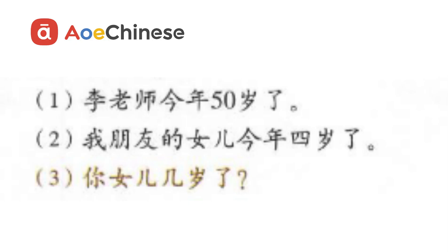For example: 李老师今年五十岁了。 Professor Li is 50 years old. 我朋友的女儿今年四岁了。 My friend's daughter is four years old.